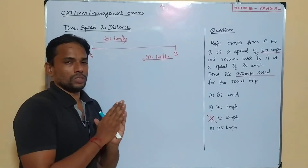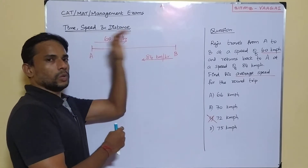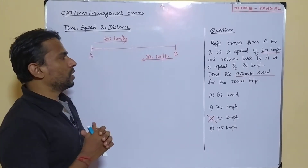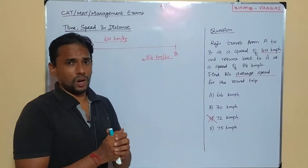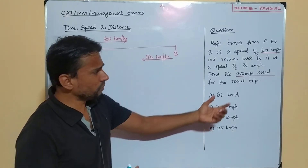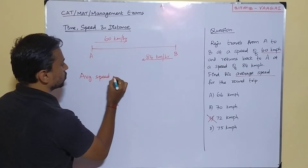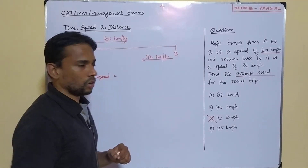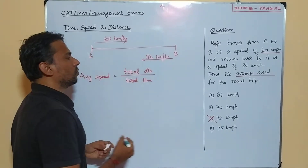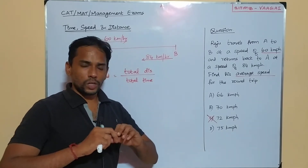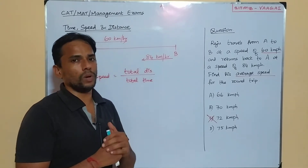Now we'll get into the correct approach — how to solve this question and get the right answer. What the question says is there are two points A and B, and the person travels from A to B at 60 km per hour, and returns from B to A at 84 km per hour. We don't have any information about the distance or time taken — only these two speeds are given. We are asked to find the average speed. We should be very sure about the definition: average speed is total distance divided by total time. This is the correct formula to find average speed.